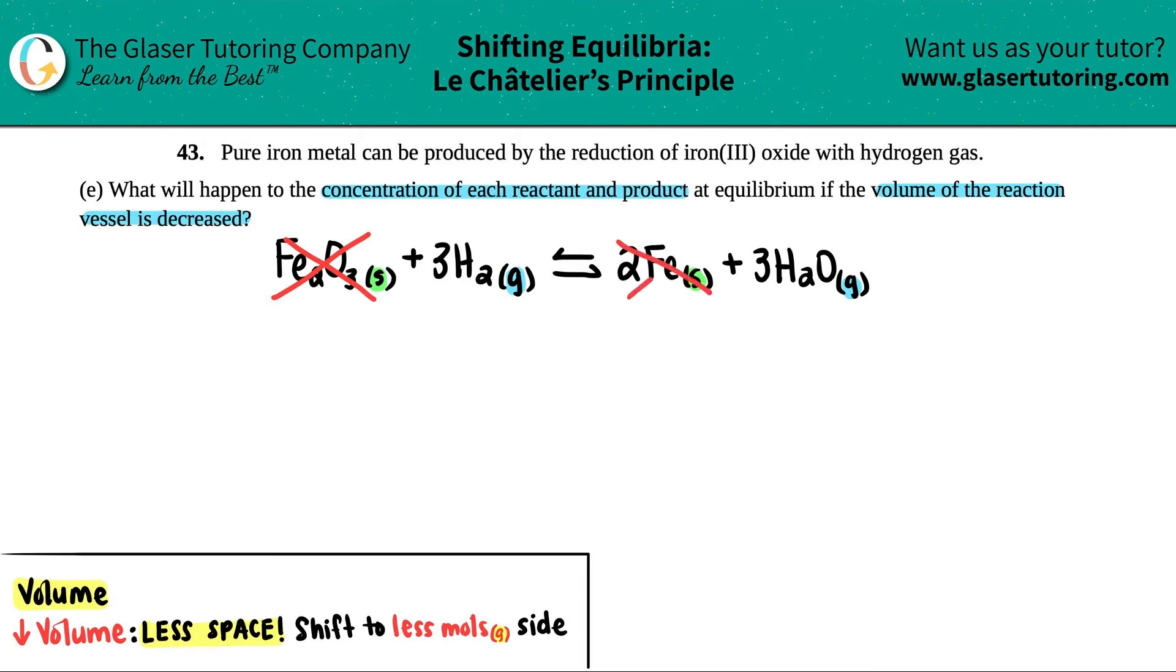Now all we got to do is just find out how many total moles of the H2 and the H2O we have. Well, look at those coefficients. I have three moles of my gas on this side, and it's literally the only gas, so I have three total moles on my reactant side.